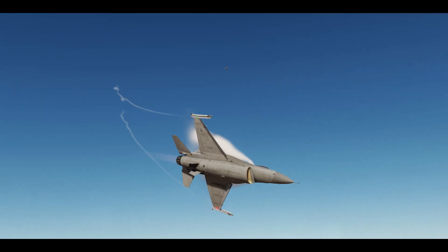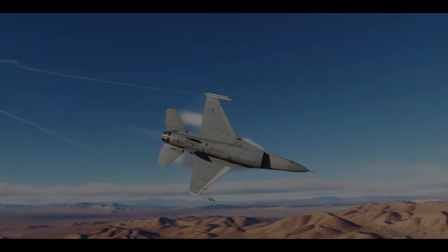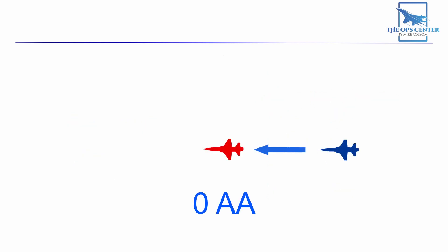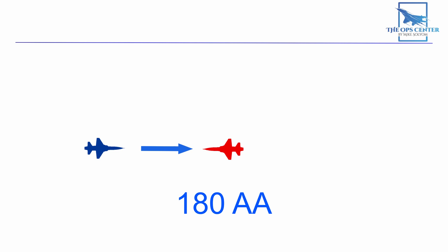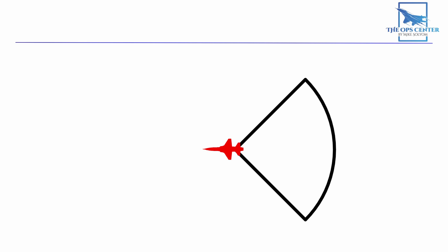Range and closure rate should be self-explanatory, but when we're talking about angles there are a few specifics we need to know. Knowing and understanding where you are off the tail of the bandit is critical, and we have a name for that angle: aspect angle, or AA for short. It goes from zero when you're directly off the tail to 180 when you're 180 degrees from the tail. This is also why head-on fights are referred to as high aspect. Lower AA is needed for a good gunshot or when employing a missile that only works on the rear quarter.